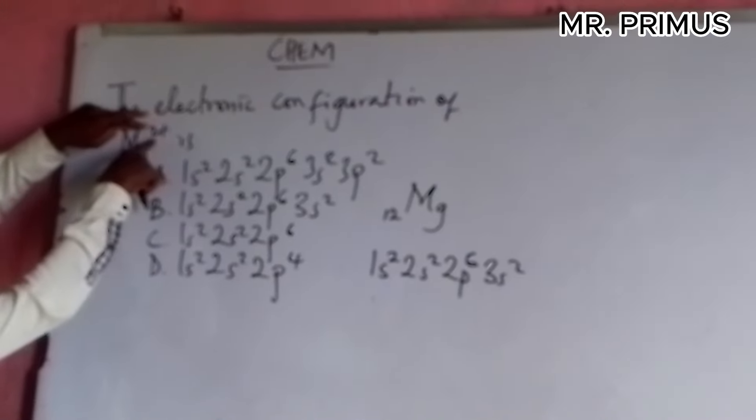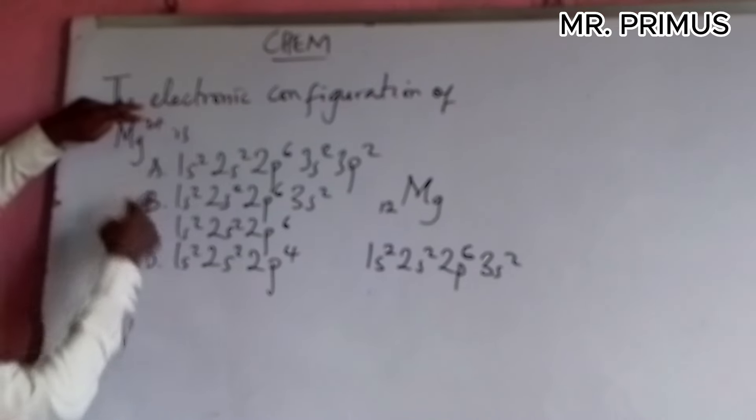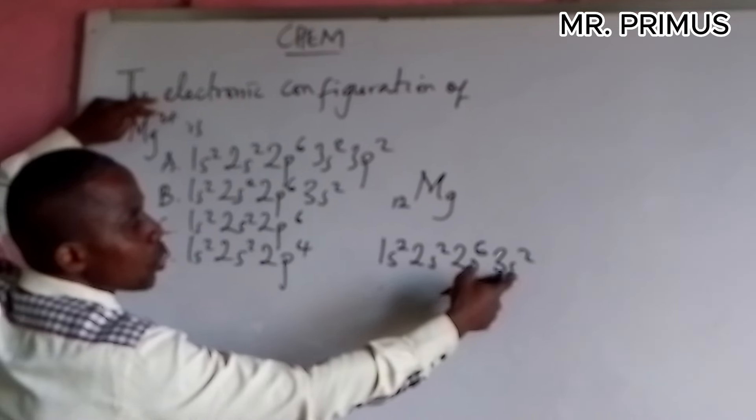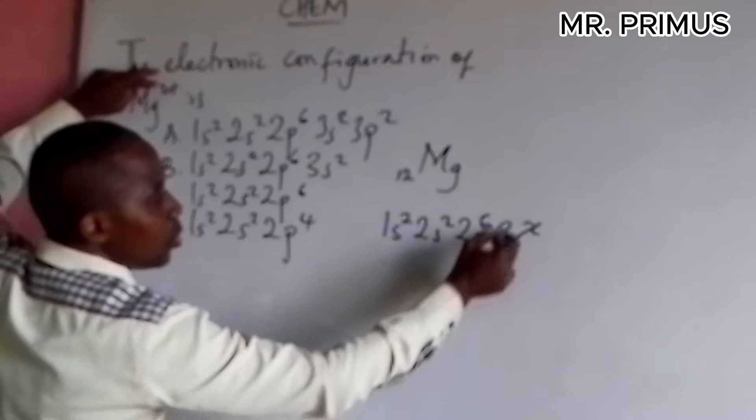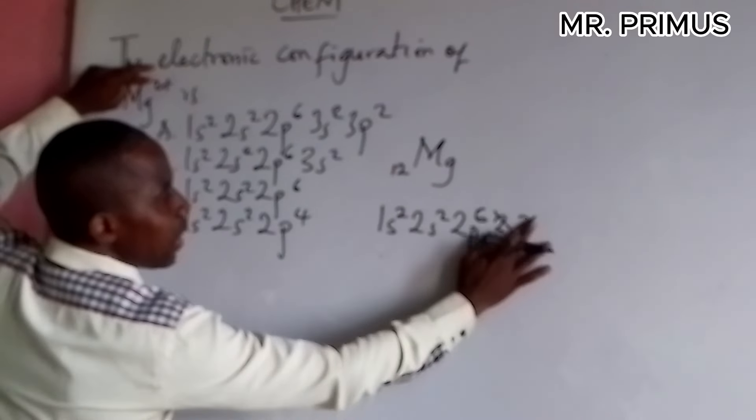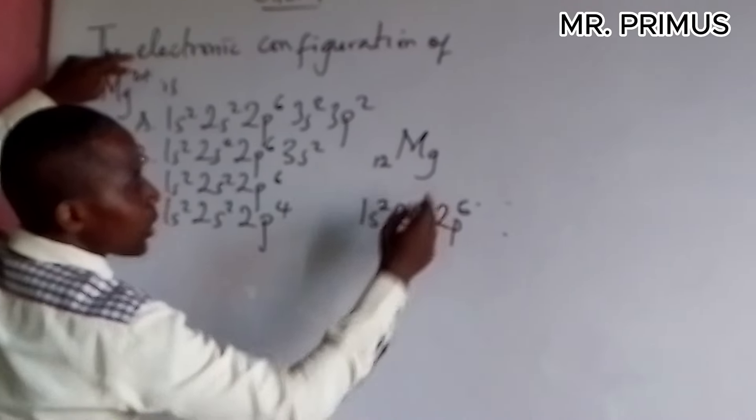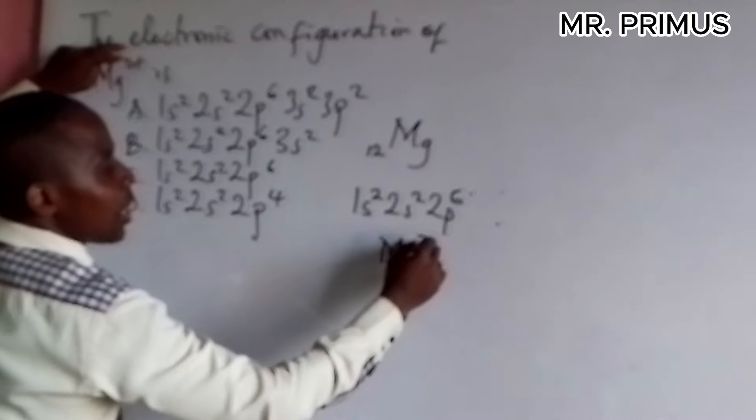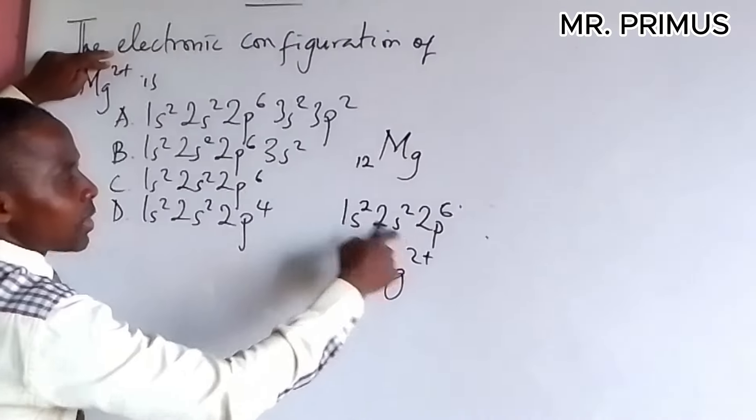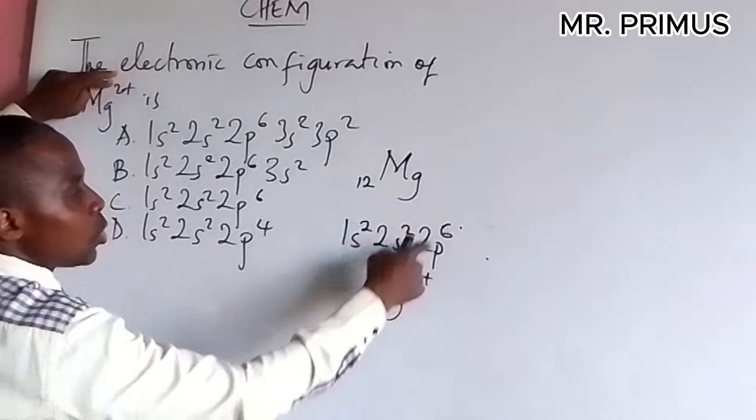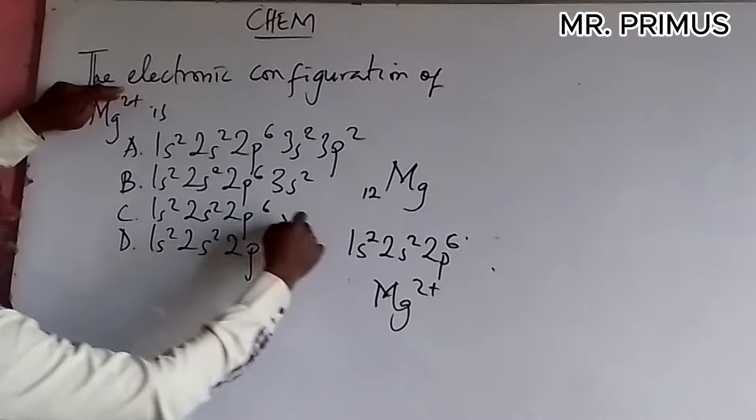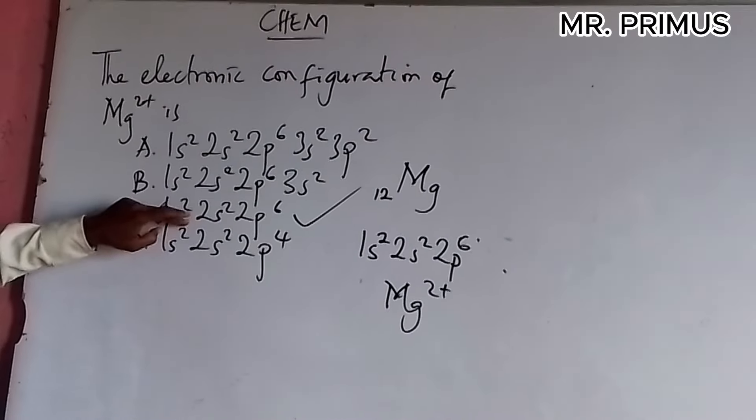But, look at this. 2 plus means it has lost 2 electrons. It lost 2 electrons to become 2+ to form this ion. Which means, it is going to lose this electron. It is going to lose this one. When this one is lost, it is lost for it to now form Mg ion, magnesium ion. Which means, 1s2, 2s2, 2p6. The answer is this. Look at the answer.